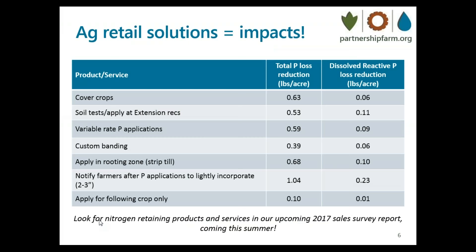Ag retailers have valuable products and services which can help reduce these losses and improve water quality. Here's a list of products that can help reduce phosphorus losses, along with rough average reductions based on published studies. Cover crops, soil testing, grid or zone sampling, variable rate application, and custom application are revenue-generating opportunities to reduce phosphorus losses. Ag retailers can also let farmers know when a broadcast application has been made so they can cover it, avoid application before a heavy rain event, abide by setbacks, and let farmers know when there's an issue like a tile drain blowout.